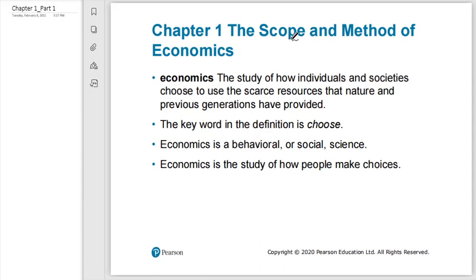Let's start with the definition of economics. One definition is: economics is the study of how individuals and societies choose to use scarce resources that nature and previous generations have provided. There are some keywords here. The key words are 'choose' and 'scarce resources,' which are very related to one another.